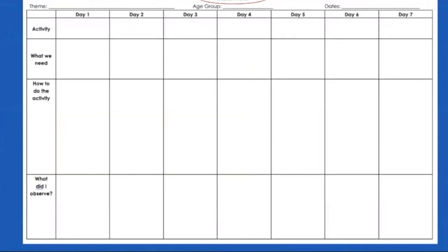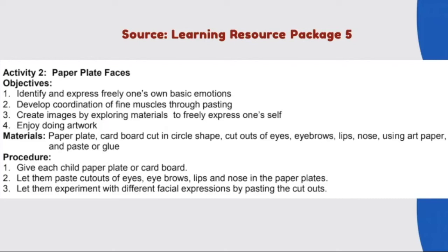This is a sample weekly plan and since the children just went through a traumatic event, the teacher has chosen the theme Feelings and Emotions to help the children identify their current emotional state and well-being. This weekly plan is being prepared for children aged 3 to 3.11 and is for implementation from August 1 to 7. Upon checking the Learning Resource Package 5, the teacher has chosen the Paper Plate Faces activity.